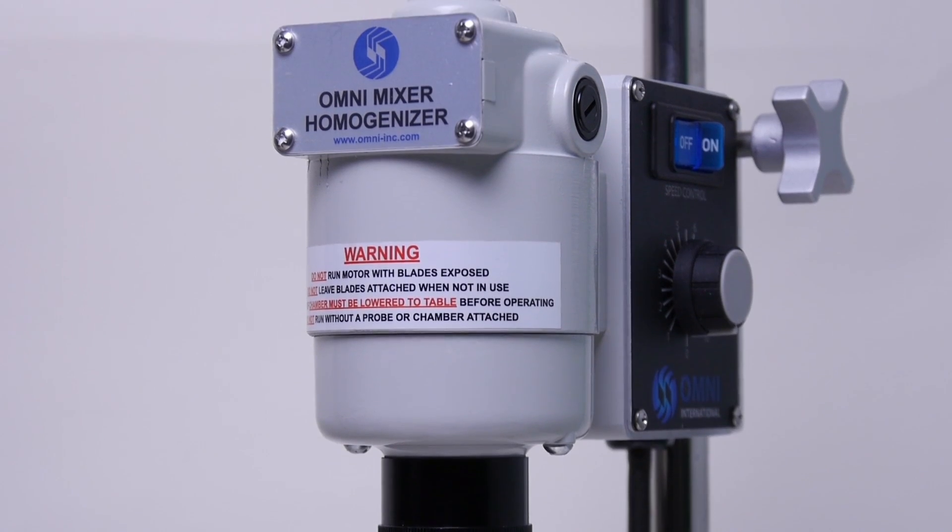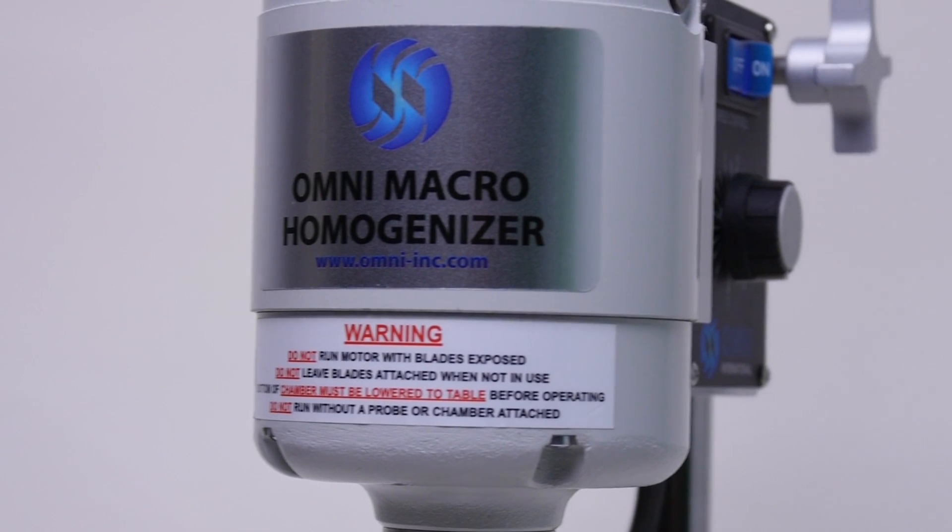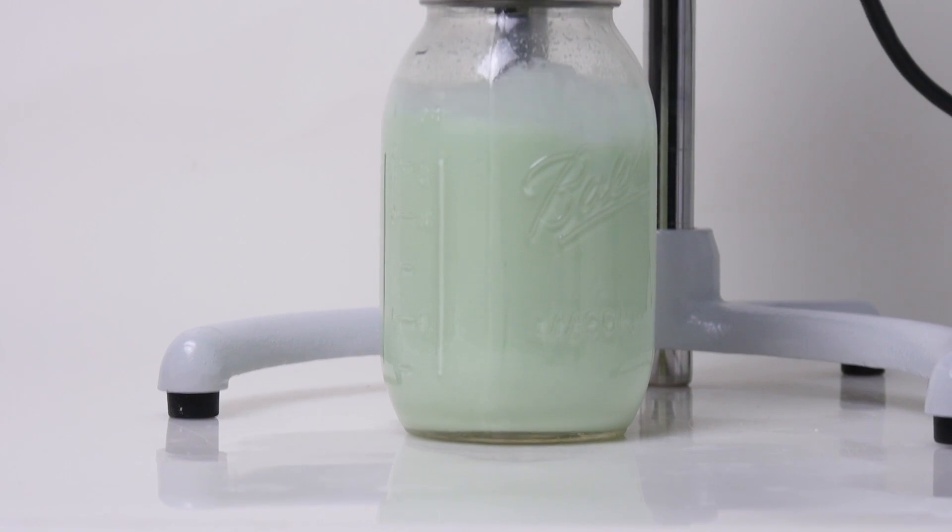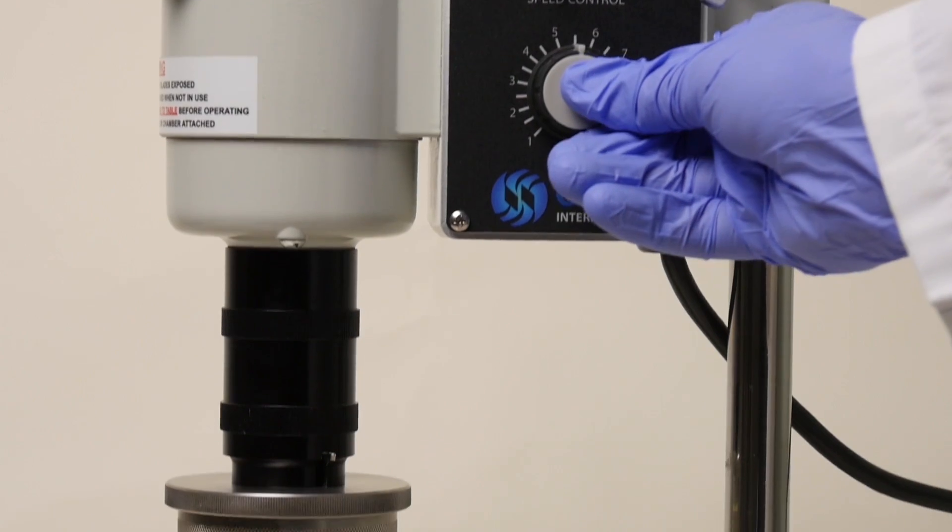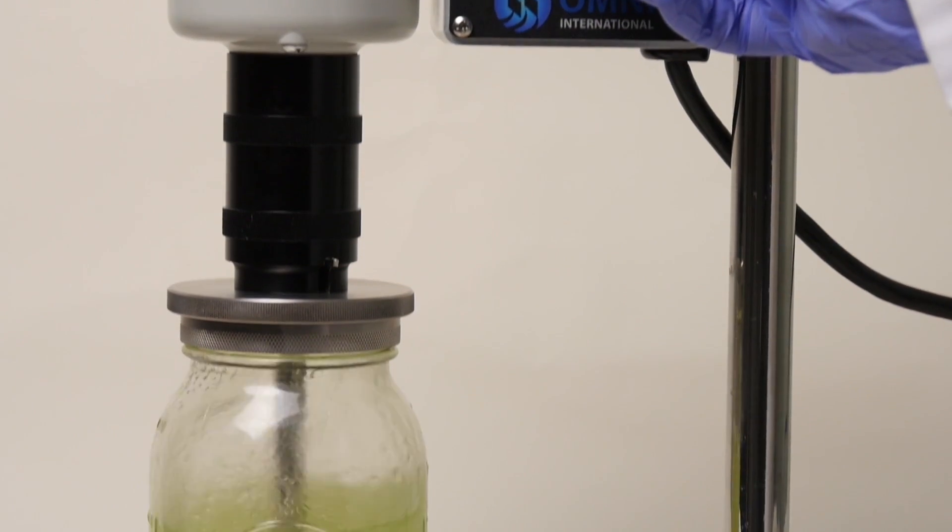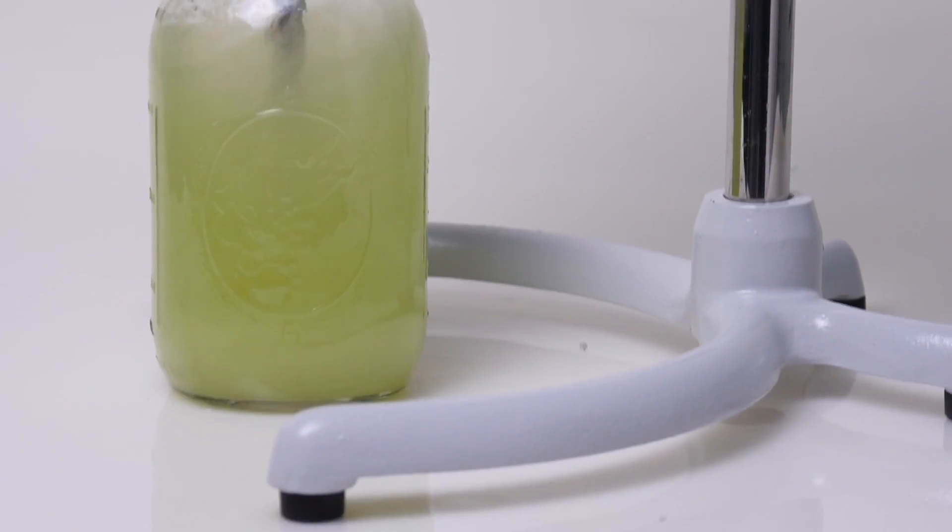The 600W Omni Mixer and 1800W Omni Macro reliably homogenize, emulsify, disperse, blend, and mix a wide range of both organic and inorganic sample materials.